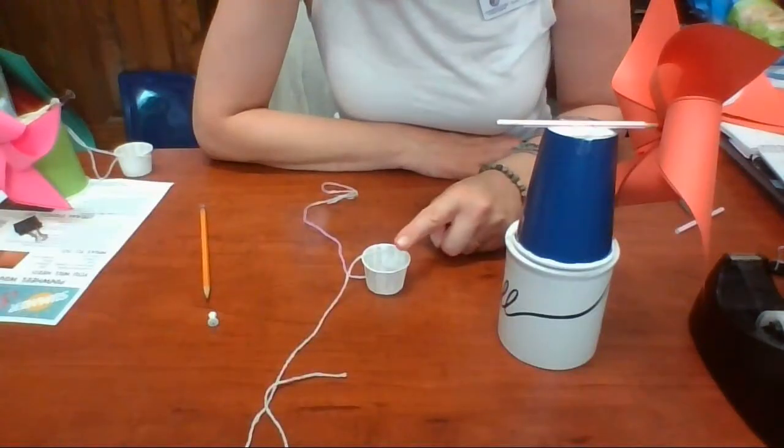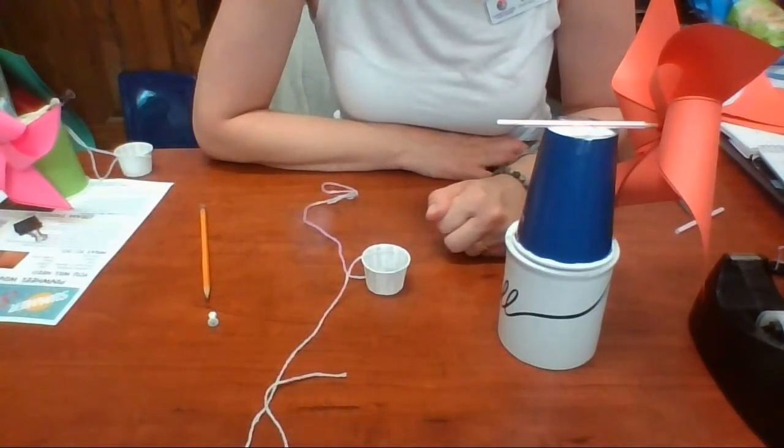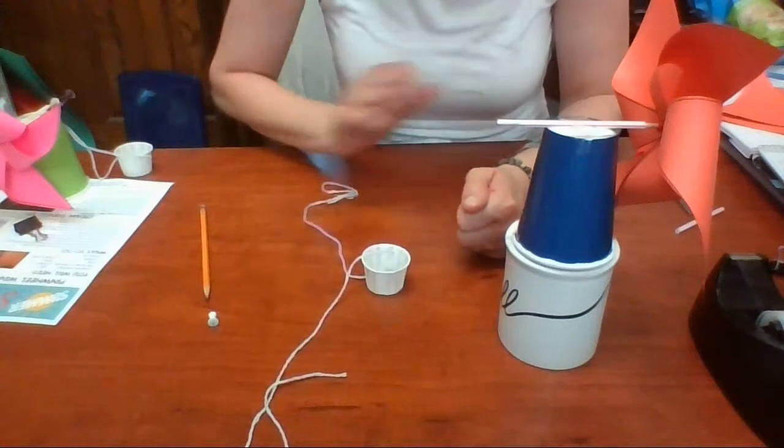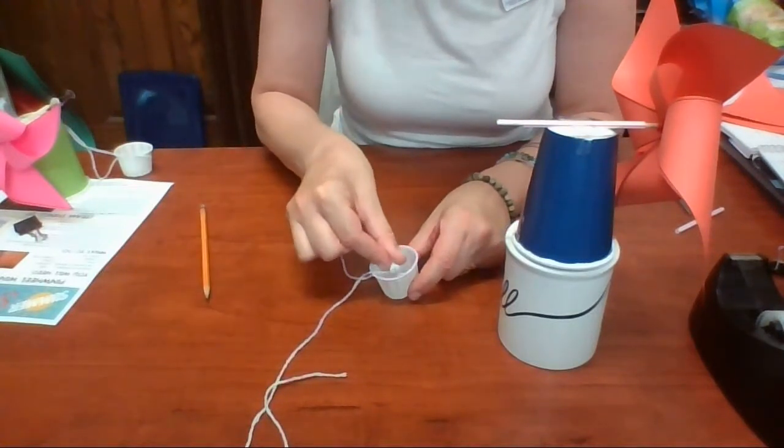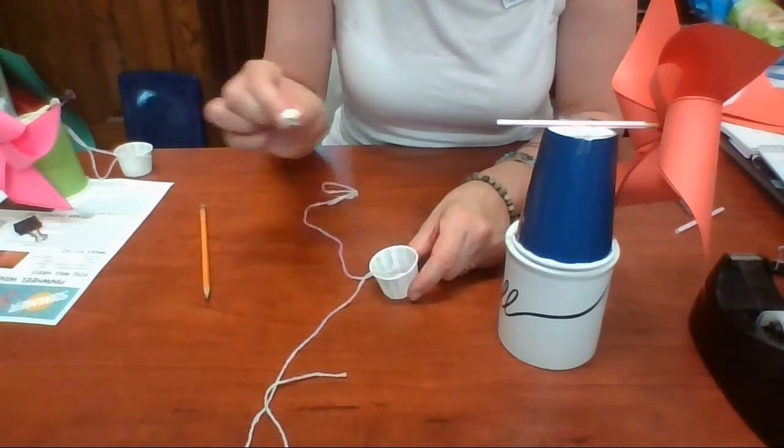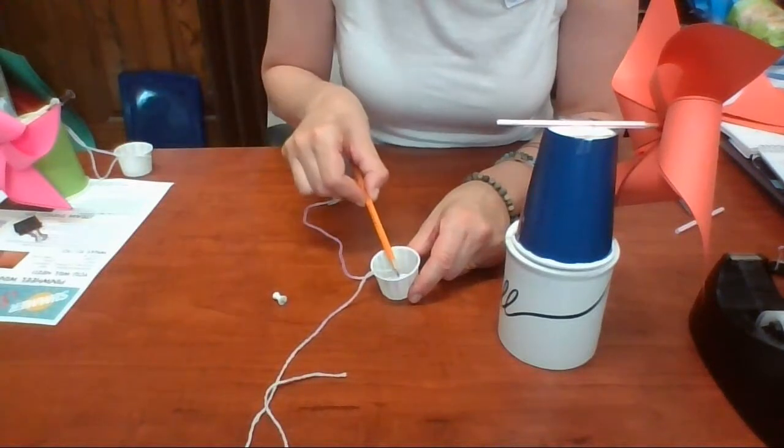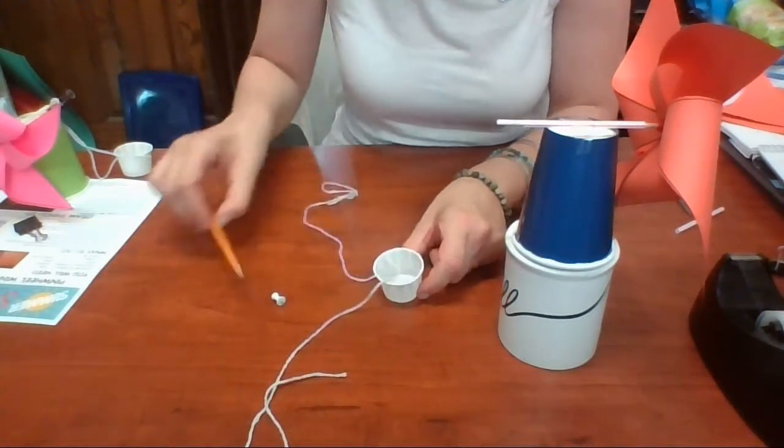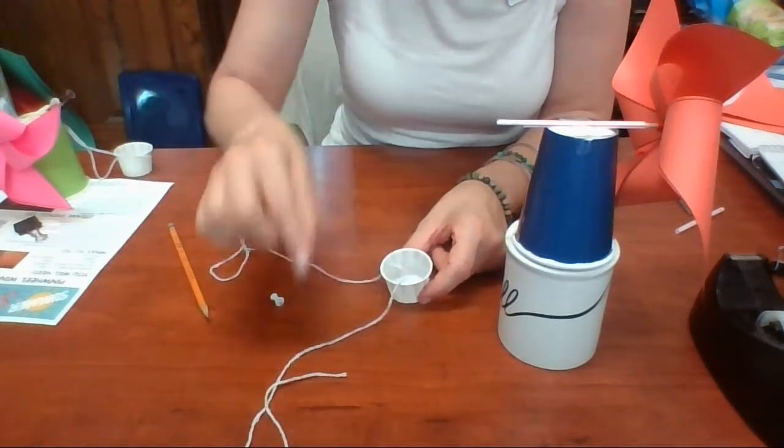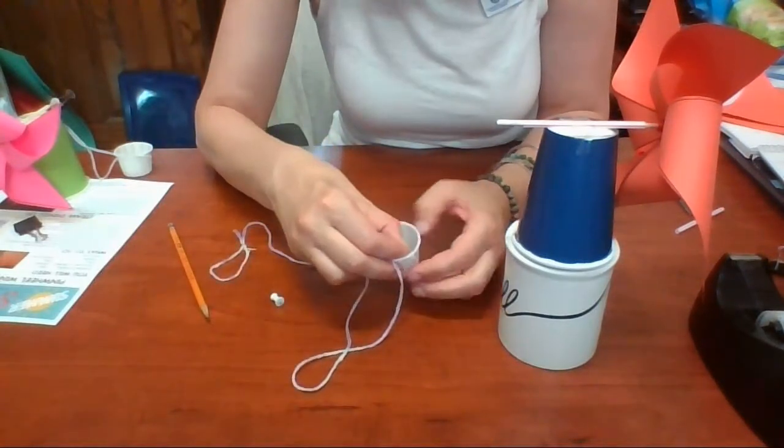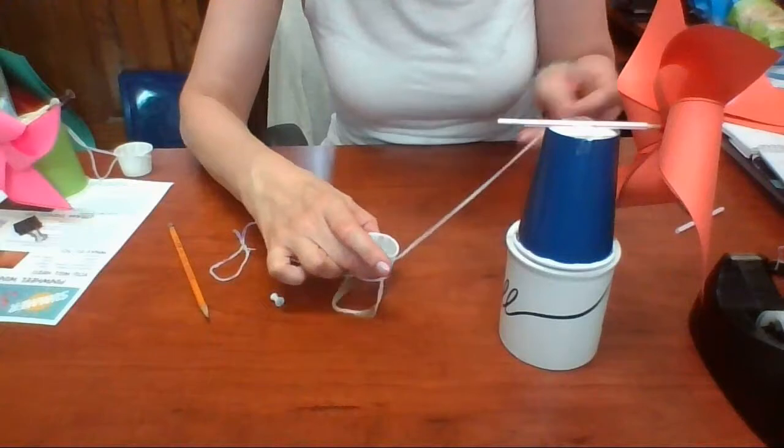I'm now going to make a bucket that I can attach to the windmill and I'm going to use the bucket to lift things. So I took the smaller cup that came in the kit and I poked starter holes on opposite sides of the cup with my thumbtack and then poked them a little bit bigger with the pencil. Then I threaded one end of the string through one hole and now I'm taking the other end of the string, feeding it through the other hole.